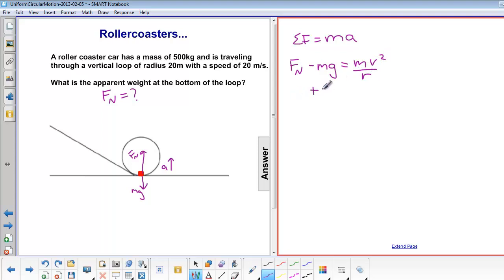We're solving for normal force, so we add mg to both sides. And we have normal force is equal to mv squared over r plus mg.